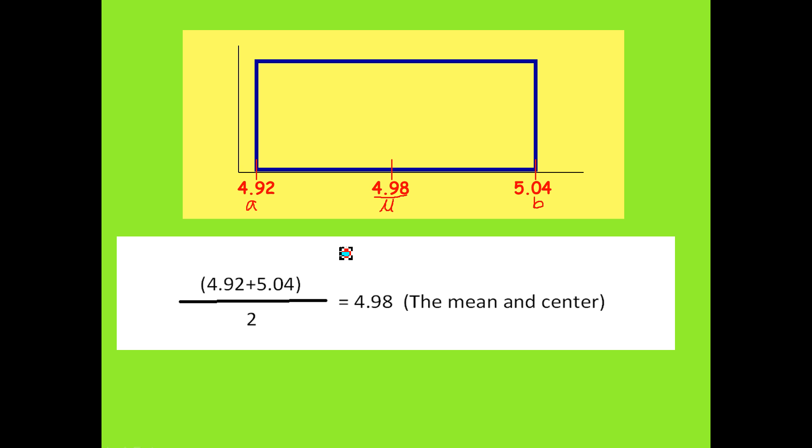Well, the formula you need to know is that the height of any uniform distribution is going to be 1 over the difference of the endpoints. So that's going to be 5.04 minus 4.92, which is equal to, in this case, 0.12. So the height, which is from here to here, that's going to be your height H, is going to be equal to 1 over 0.12.